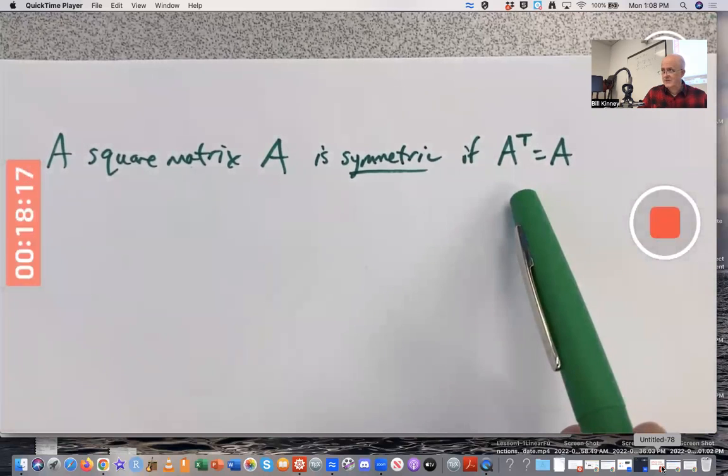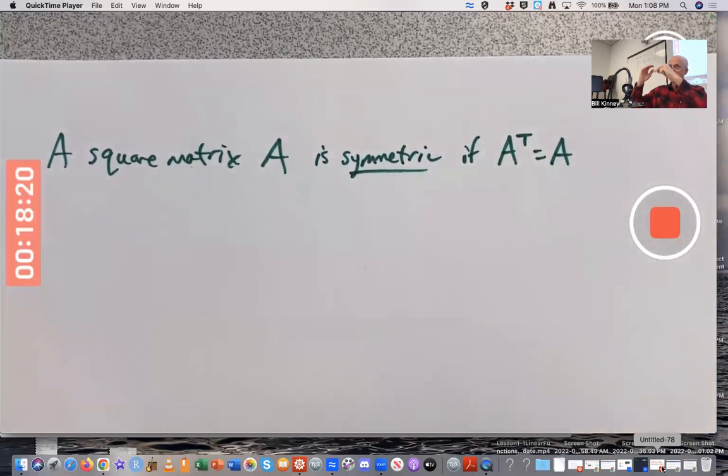But for square matrices, it's possible. What do you do to get the transpose? Take each row of A and make them the corresponding columns of A transpose. First row of A becomes the first column of A transpose. Second row of A becomes the second column of A transpose.